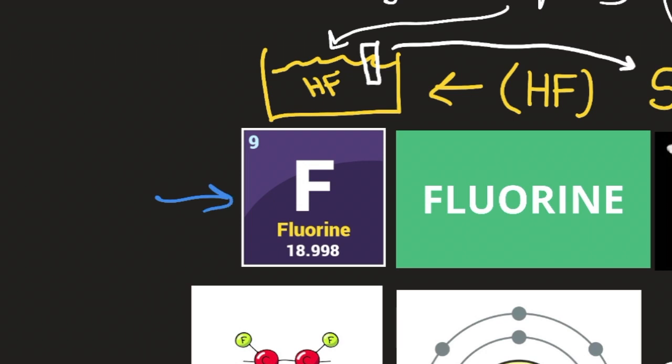Hydrofluoric acid burns through glass — do not put it in glass, it will burn because it's silicon dioxide. Remember that by remembering that fluorine is used to make your computers: by etching the chips and making them exactly how scientists need them to function as computers for everyday life and society.